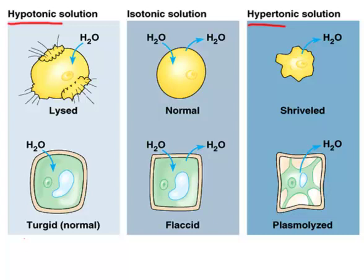The prefix hypo means under or low — for example, a hypodermic needle goes under your skin (dermic = skin, hypo = under). So a hypotonic solution is one with a low concentration of solutes. The word hyper means extra or more — like a hyperactive kid who can't settle down. A hypertonic solution has a high concentration of solutes, shown with a dark blue background. In the middle is an isotonic solution, where conditions are the same both inside and outside the cell.